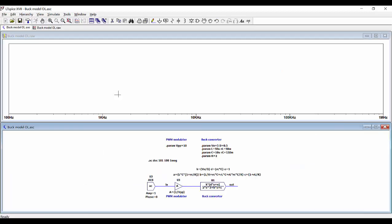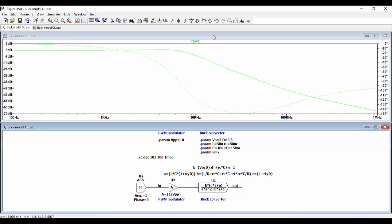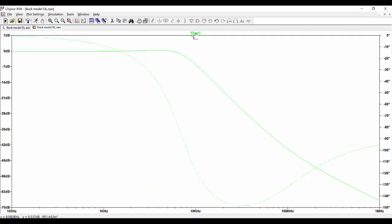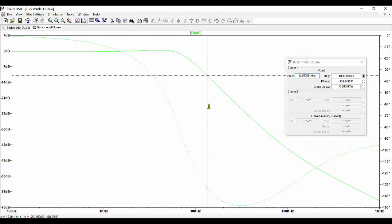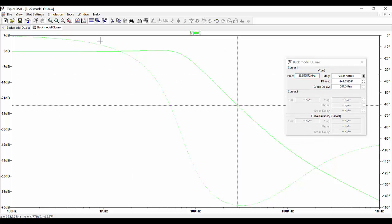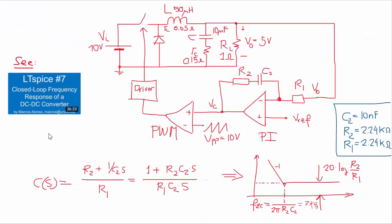After running the simulation, we can see the behavior of our converter. In the solid line we see the gain of the converter, and in the continuous line we see the phase of the response. In LTSpice video number 7 we saw how to close the loop for this same converter using a PI compensator. The response of the PI compensator is defined by its expression, and in that video we calculated the different parameters of the PI compensator, obtaining values for the capacitance and resistances of the compensator.